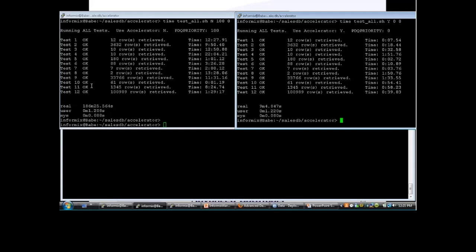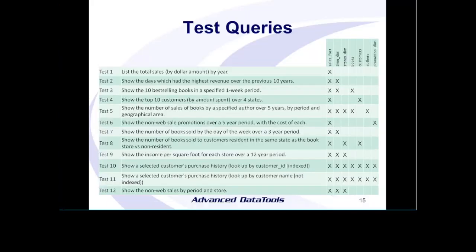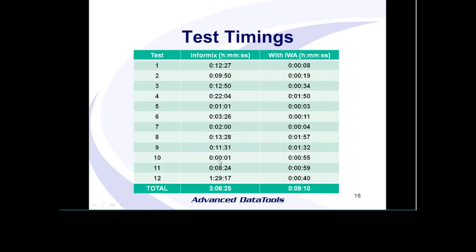Going back to test 10 and 11 — test 10 was the query that was completely indexed, hitting all our tables using index joins. Without the accelerator it ran in one second, which is what we'd expect. Everything's indexed, ran really well. With the accelerator, this ran much slower — 55 seconds, almost a minute. That's also what we'd expect: if your queries are all indexed and returning just a few records, you'd expect Informix without the accelerator to run well.